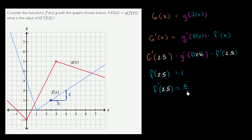So the slope of the function right over there is 2 thirds. So f prime of 2.5 is equal to 2 thirds. And so we can substitute back in here. F of 2.5 is equal to 1, and this is equal to 2 thirds. Now we're not done yet.